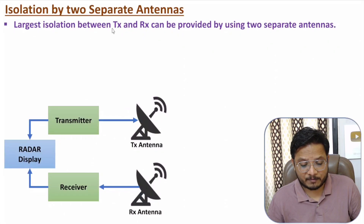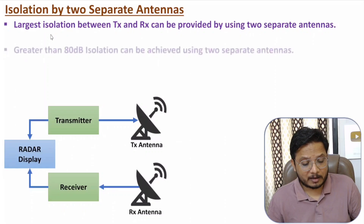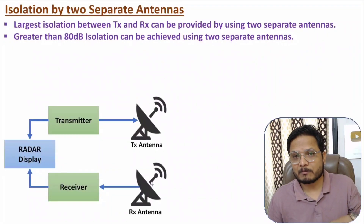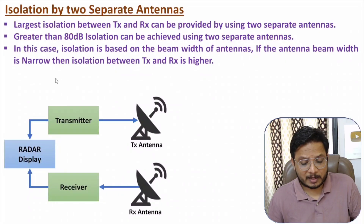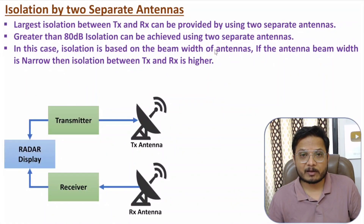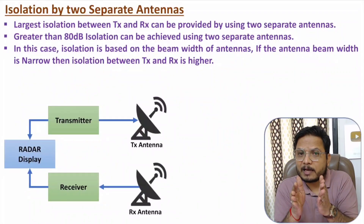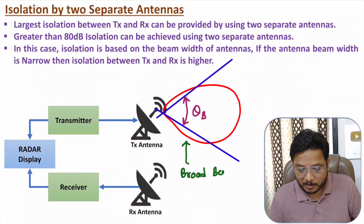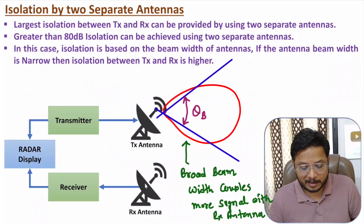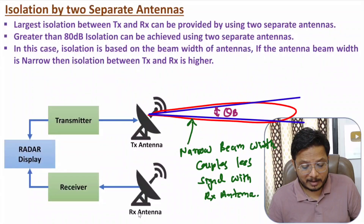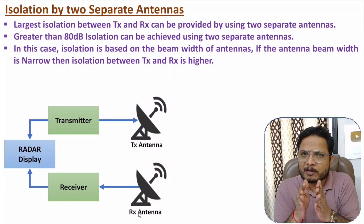The largest isolation is possible when you provide two separate antennas for transmitter and receiver. Greater than 80 dB isolation can be achieved using two separate antennas, and that is practical isolation, not just theoretical. However, isolation also depends on some parameters. The isolation between transmitter and receiver due to two separate antennas depends on the beam width of the antenna. If you use antennas with very narrow beam width, isolation will increase — because with a broad beam width, signal coupling will happen between the transmitting and receiving antennas. But if beam width is very narrow, EM wave coupling between Tx and Rx antennas will be very less. So, narrower the beam width, more the isolation.